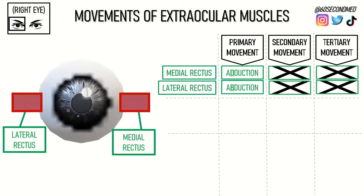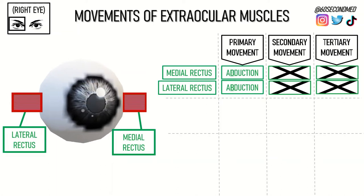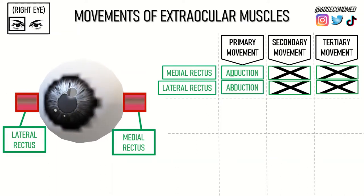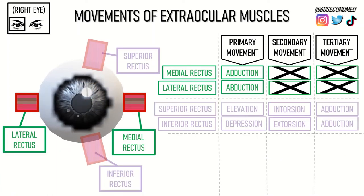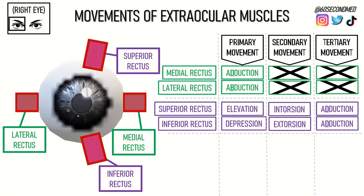With the medial and lateral recti, the primary movement for the medial rectus is to adduct the eyeball, and for the lateral rectus to abduct the eyeball. These muscles do not have a secondary or tertiary movement.